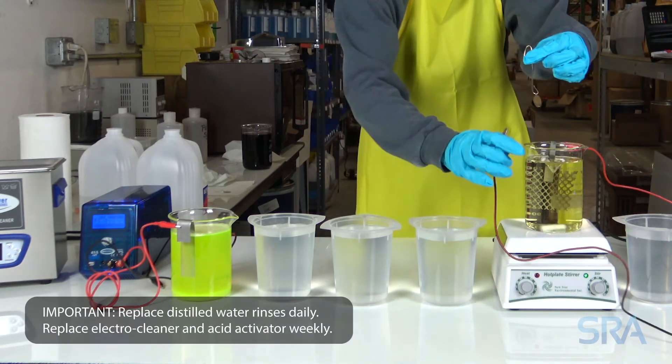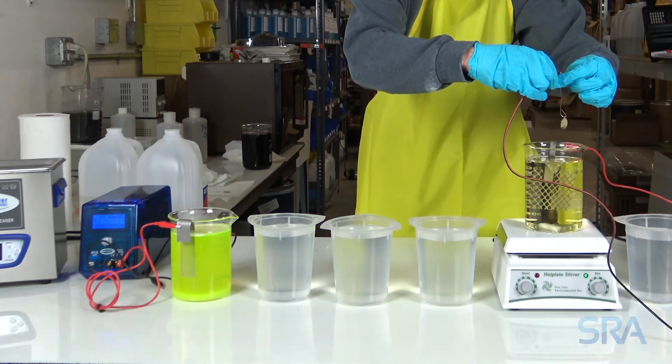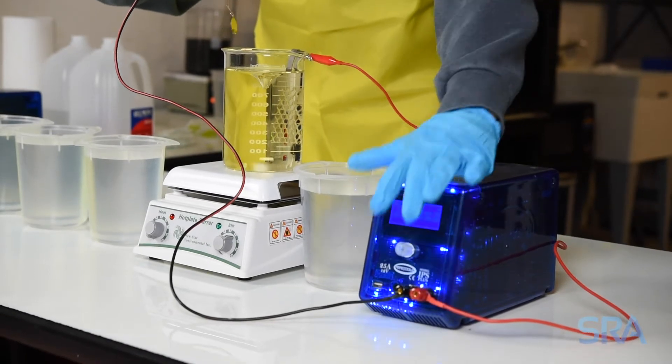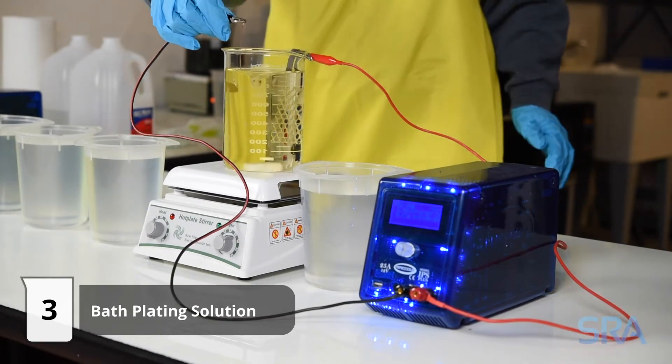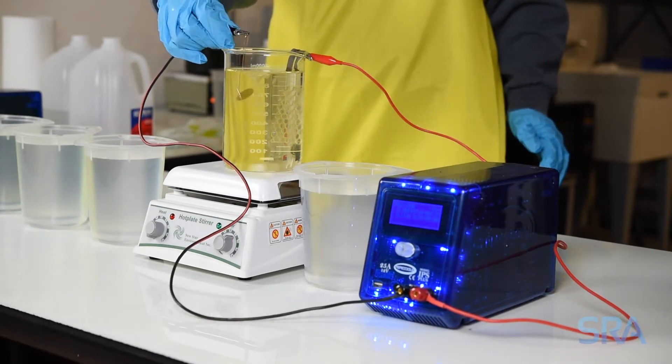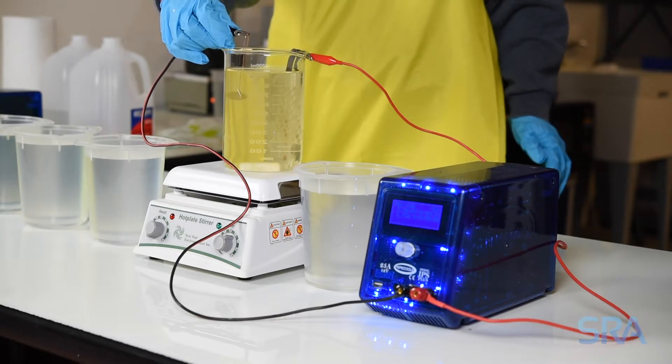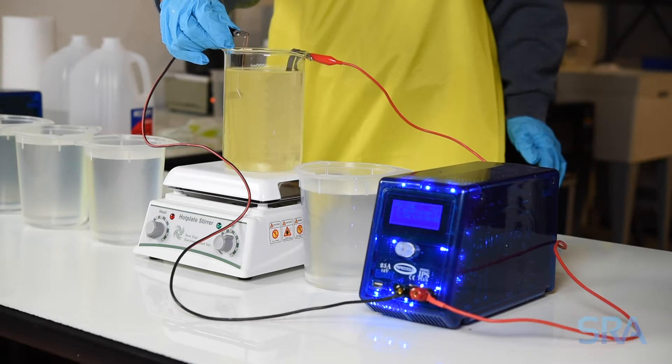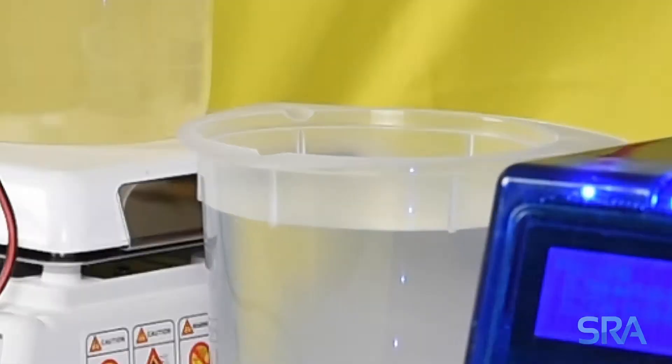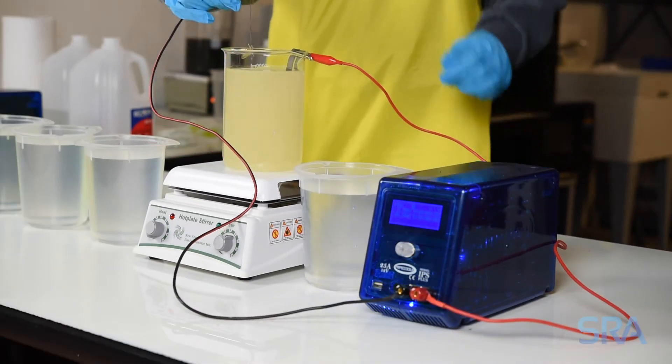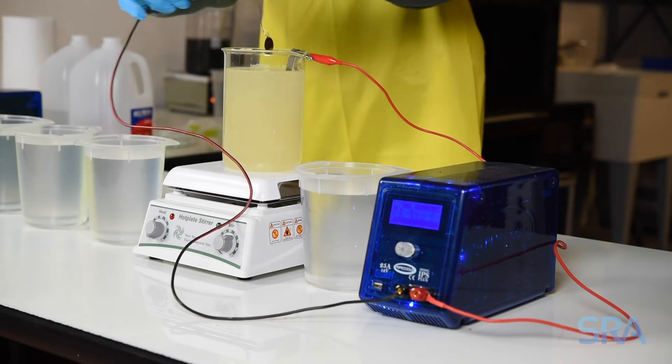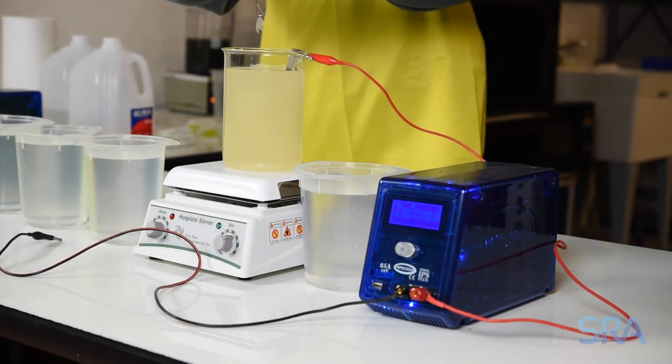Finally, connect the negative lead from the plating rectifier to your item, turn on the unit and begin plating. We're gonna plate for one minute at 85 degrees Fahrenheit with 2 volts applied to the platinized titanium anode. Make sure to visually inspect the item throughout the plating process. When the desired color is achieved, finish with the distilled water rinse.